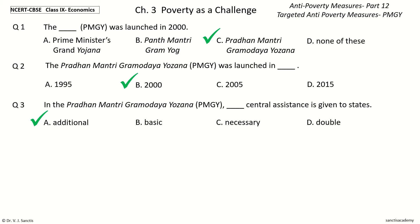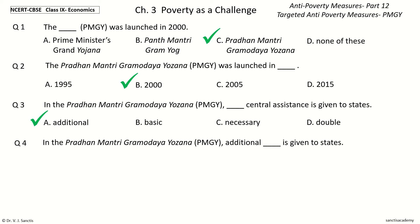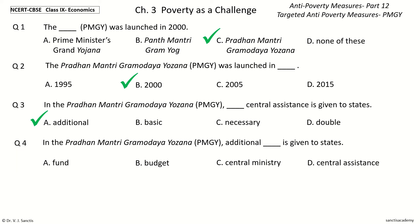So, in the Pradhan Mantri Gramodaya Yojana (PMGY), Additional Central Assistance is given to States. Question 4: In the PMGY, Central Assistance is given to States — the blank here refers to the type of assistance. The options are: Fund, Budget, Central Ministry, or Central Assistance. And the answer is Central Assistance.